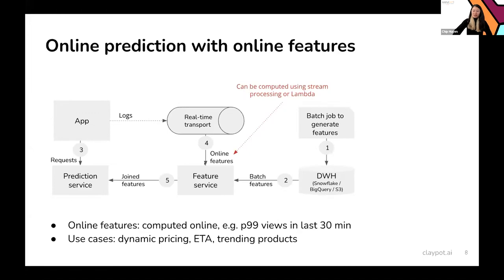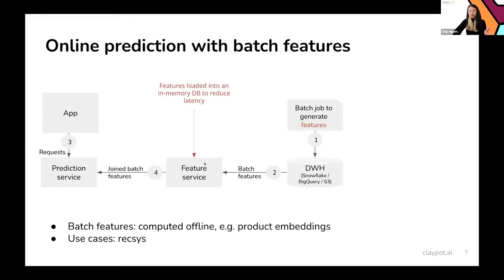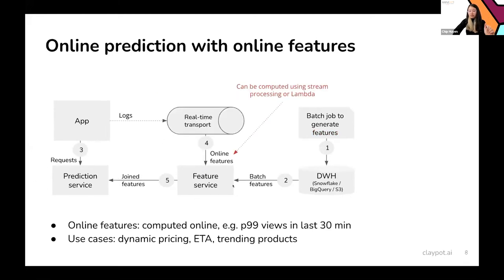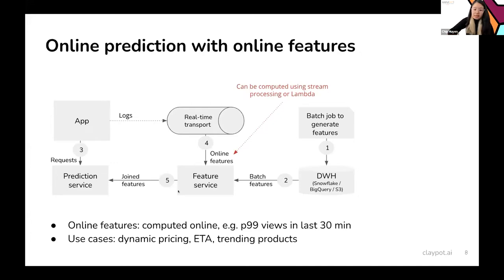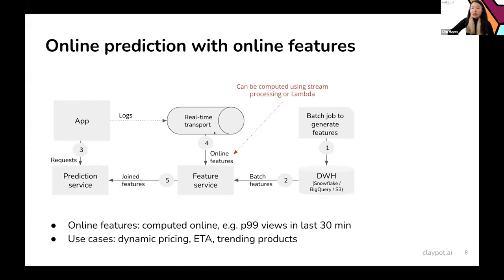You can see that there's a clear difference from batch prediction to online prediction with batch features, to online prediction with online features — the key difference is in the feature service. A lot of companies are looking into what's called a feature store. For a feature store to work, it needs to connect to different data sources — both offline batch sources like data warehouses such as Snowflake and BigQuery, and streaming sources like Kafka and Kinesis.